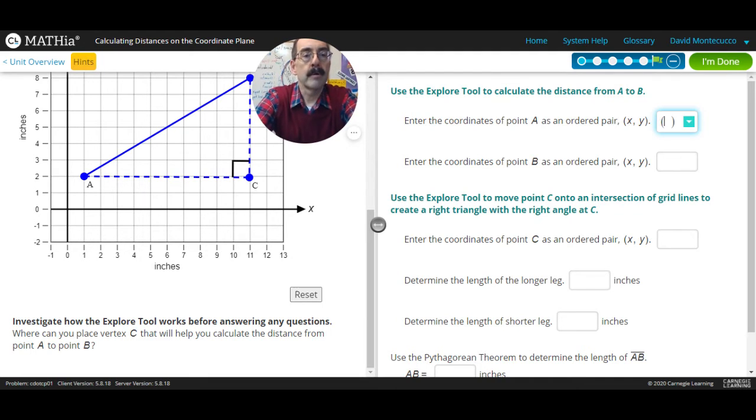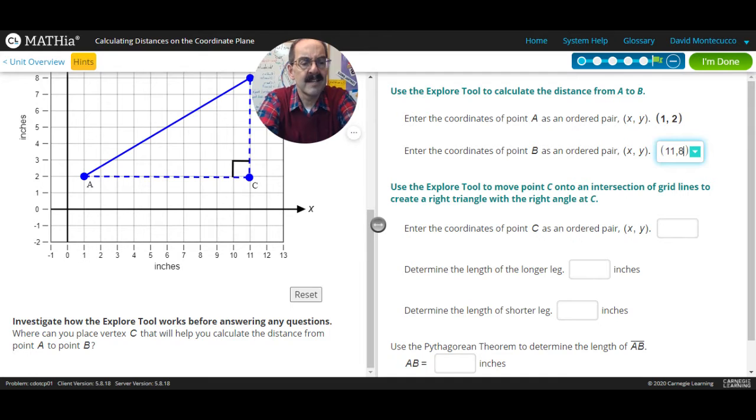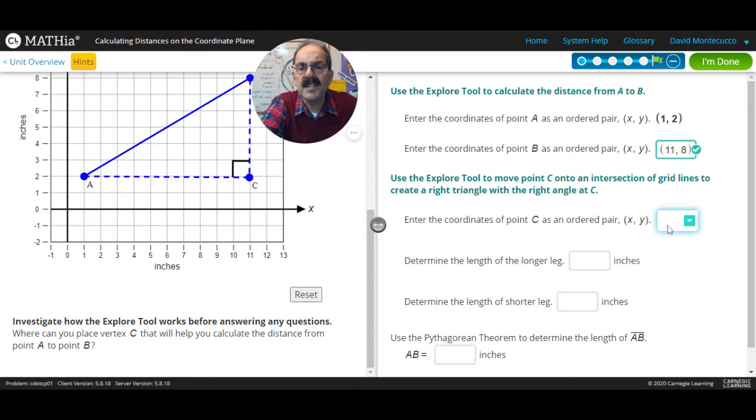So parentheses, 1, 2. And our coordinate point B, B is going to be 11, 8. So parentheses, 11, comma, 8. And enter C, C such that we create the 90 degree. So 11, 2.